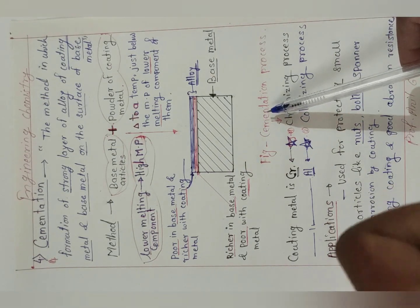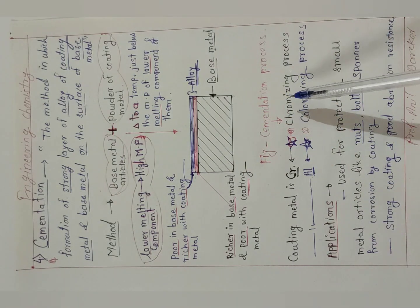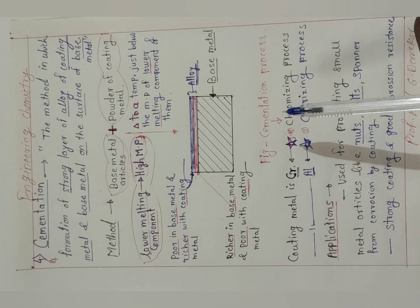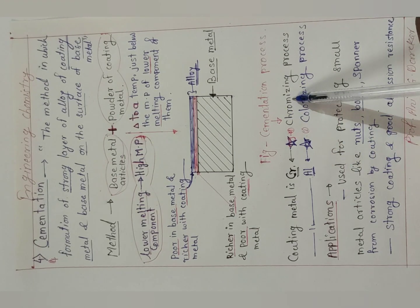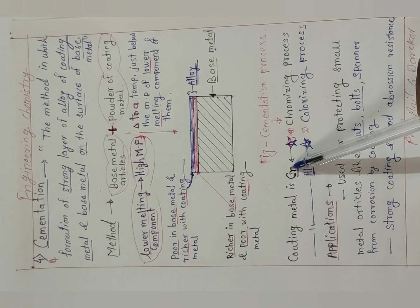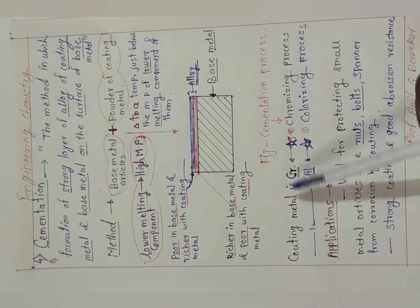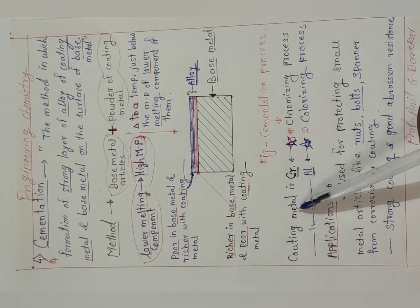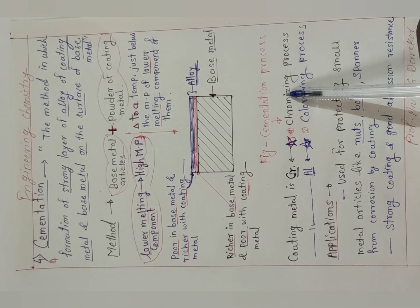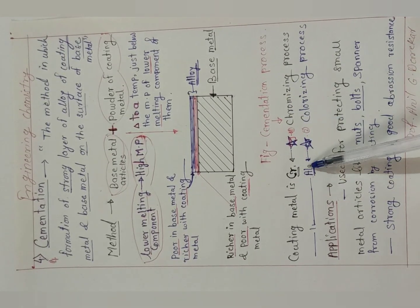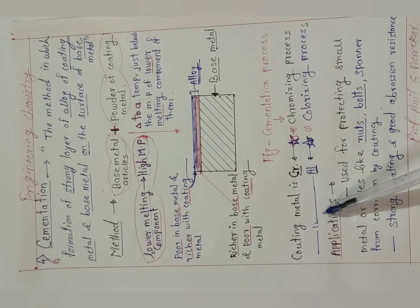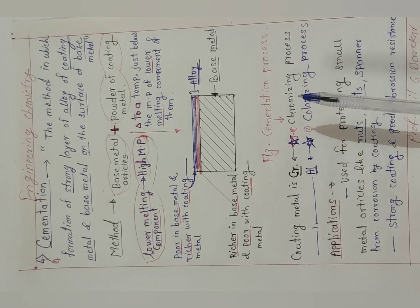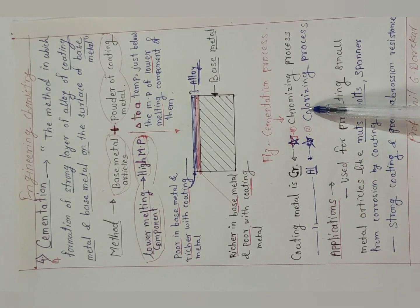This cementation is also called the chromizing process or the colorizing process. When chromium is used as the coating metal, the process is called chromizing. When aluminum is used for coating, the process is called colorizing.